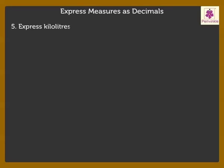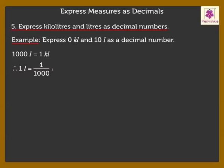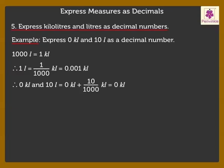Finally, let us express kiloliters and liters as decimal numbers. Express 0 kiloliters and 10 liters as a decimal number. We know that 1000 liters is equal to 1 kiloliter. Therefore, 1 liter is equal to 1 upon 1000 kiloliters, which is equal to 0.001 kiloliters. Hence, 0 kiloliters and 10 liters is equal to 10 upon 1000 kiloliters, which is equal to 0.01 kiloliters.